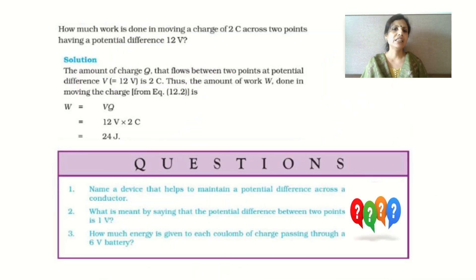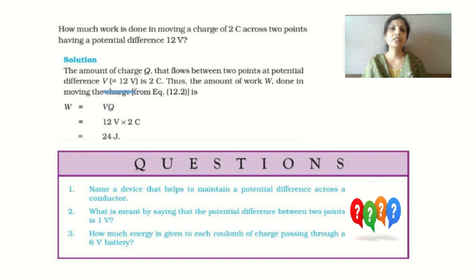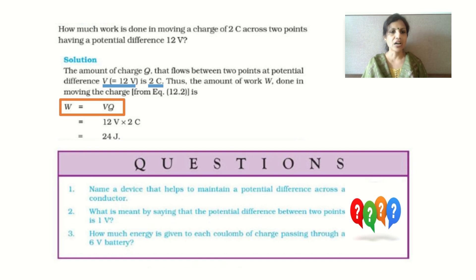Based on today's lesson, here is a numerical: How much work is done in moving a charge of 2 coulomb across 2 points having a potential difference of 12 volts? Given: potential difference = 12 volts, charge Q = 2 coulomb. Find: work done. Using the formula W = V × Q = 12 × 2 = 24 joules. So the work done is 24 joules.